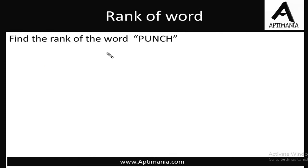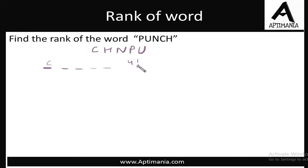The next word is Punch. First we arrange the letters in alphabetical order: C, H, N, P, and then U — five letters. Starting with C: C was not required at first position, so 4 positions and 4 letters remain, arranged in 4 factorial ways. Move to the second letter H — also not required, again 4 factorial ways. Then N — also not required, we make 4 factorial words starting with N. Next is P — P is required, so we cancel it and restart with C for the second position.